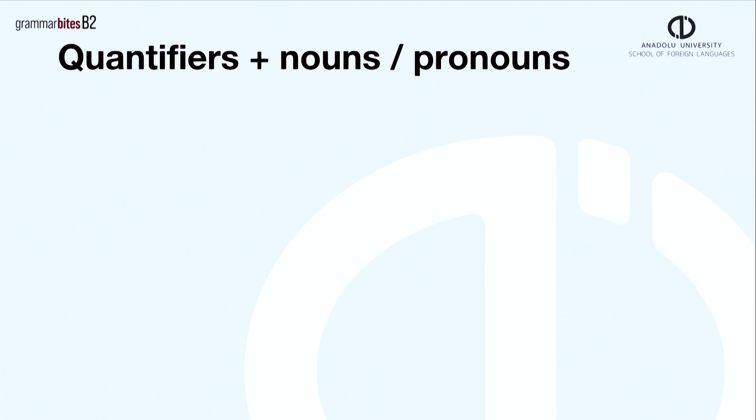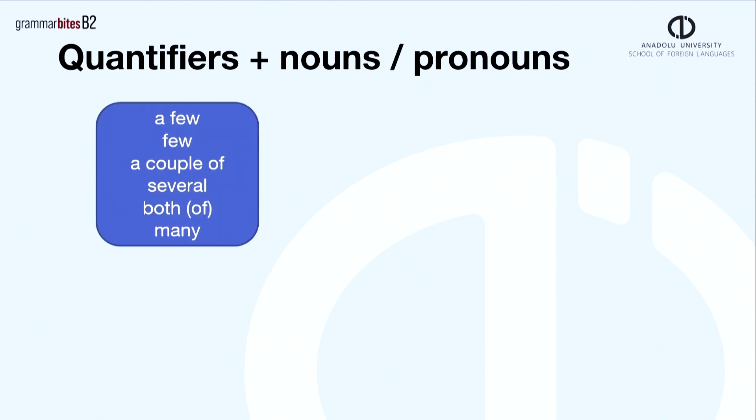So, when we use a quantifier, we should be careful. For example, a few, few, a couple of, several, both of and many are used with countable nouns.